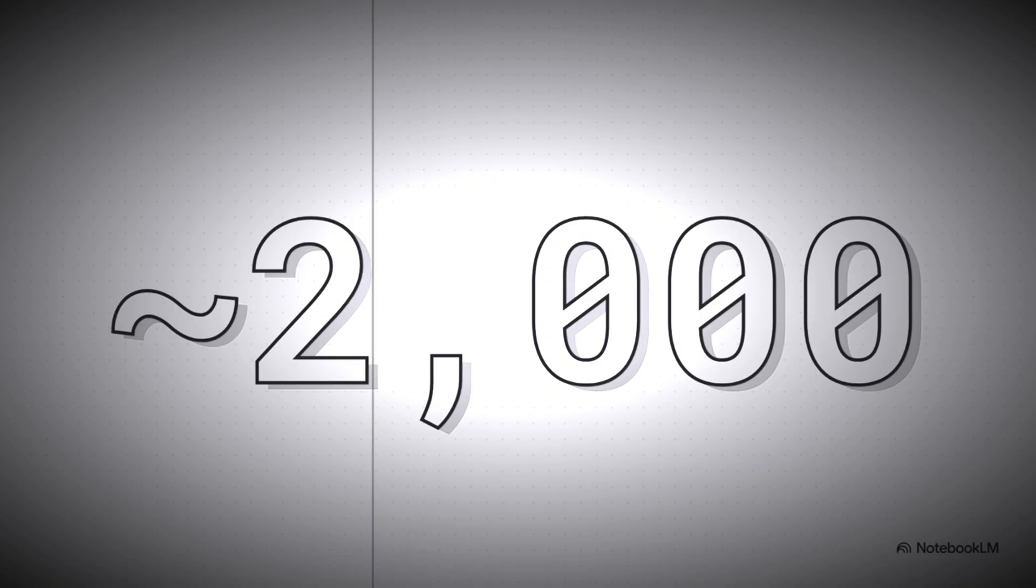And that's because a standard .30-06 round is carrying a massive amount of kinetic energy. We're talking around 2,000 foot-pounds. To give you an idea of what that means, picture a one-ton block, like a small car, being dropped from a foot high. Now imagine all of that force, all of it, concentrated onto the tiny tip of a bullet. That's what we're talking about.